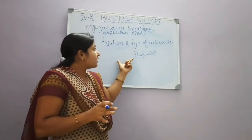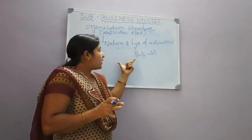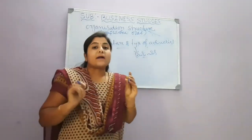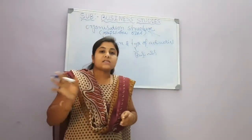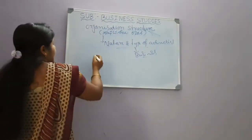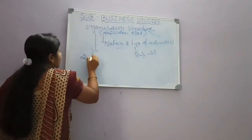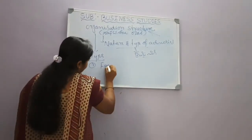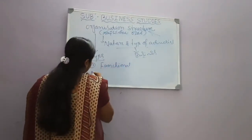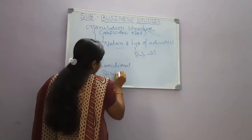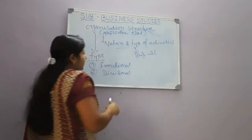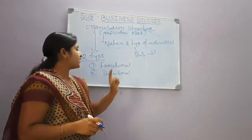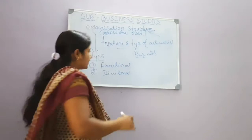Organization structure can be classified into two types. One is functional structure of organization. Another one is divisional structure of organization.